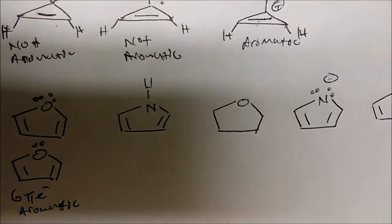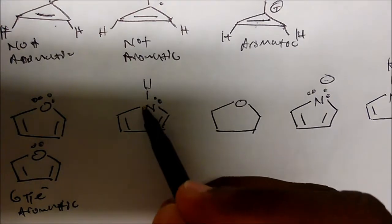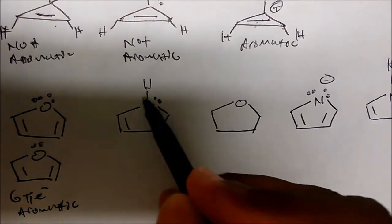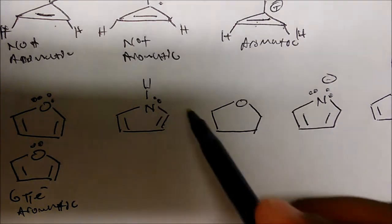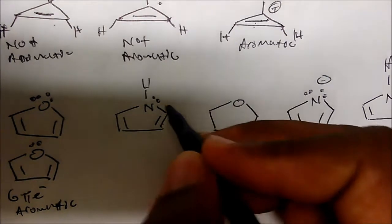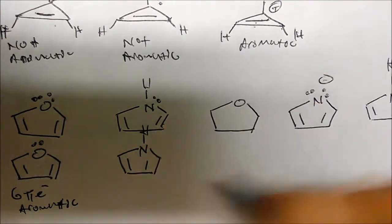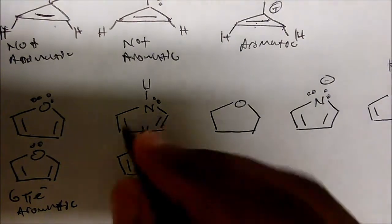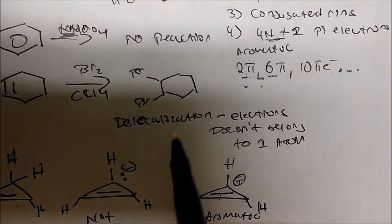What about this next compound? It has two, four, six pi electrons. The nitrogen might look sp3 — four electron groups — but remember, if we can delocalize the electrons into the ring to give aromaticity, we do it. Delocalizing the lone pair gives an sp2 hybridized nitrogen and six pi electrons. This is aromatic.